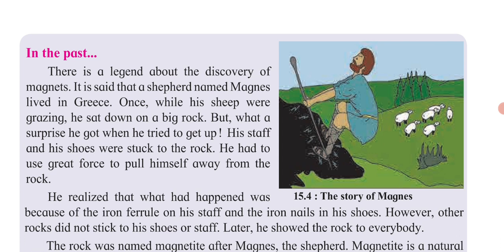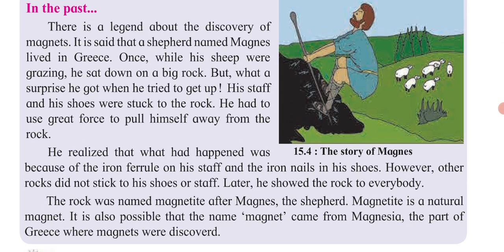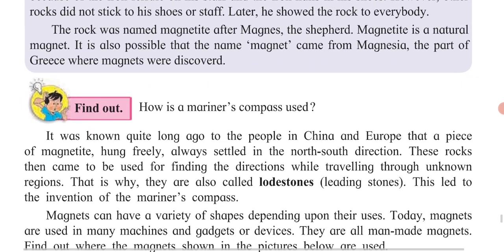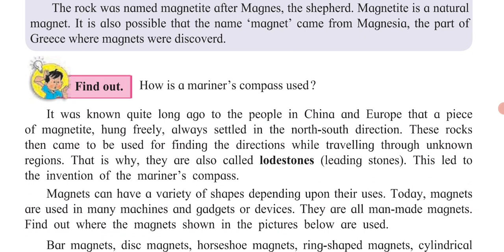He realized this happened because of the iron ferrule on his staff and the iron nails on his shoes — iron was present near his shoes and in his staff. He showed this rock to everyone. The rock was later named magnetite, and the word 'magnet' came from 'Magnesia,' which is the part of Greece where magnets were discovered.